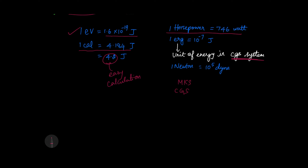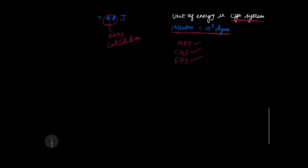There are three systems of measurement: MKS (meter, kilogram, second), CGS (centimeter, gram, second), and FPS (foot, pound, second). 1 newton is equal to 10 power 5 dynes.